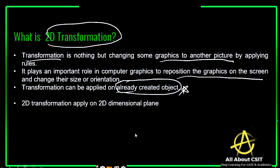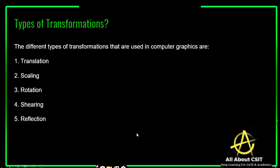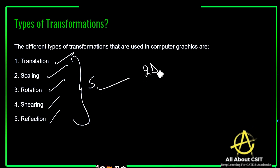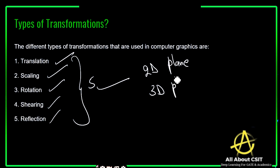2D transformation applies on a 2D dimensional plane. The different types of transformations are translation, scaling, rotation, shearing, and reflection — five different types. You can apply these five transformations on a 2D plane as well as on a 3D plane. They can be applied on 3D objects as well as on 2D objects.